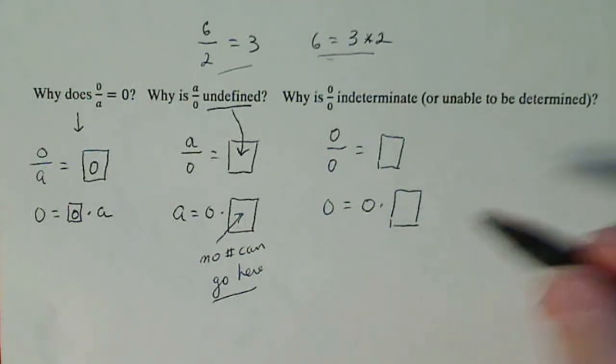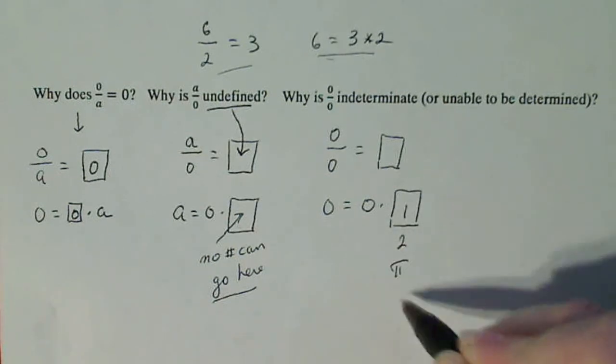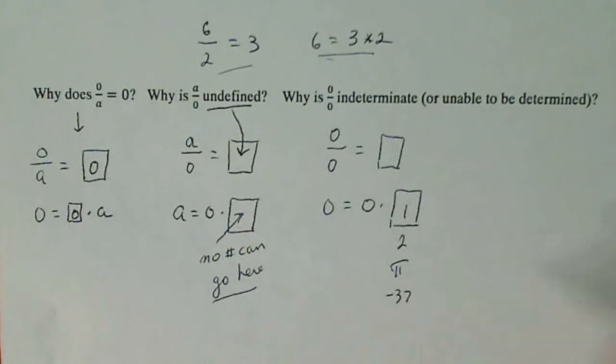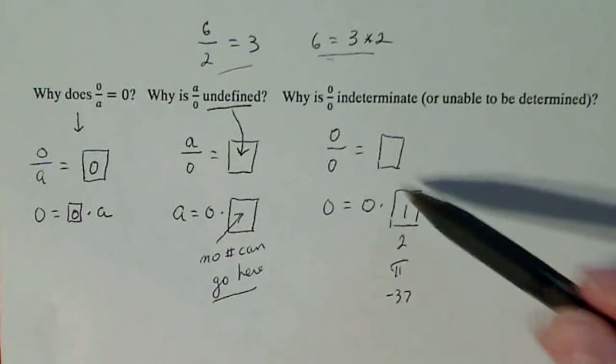Well, there's an infinite amount of them. I can put 1 in the box. I can put 2 in the box. I can put pi in the box. I can put minus 37 in the box. I can put any of those in the box. And I'll always get 0 times that number is 0.